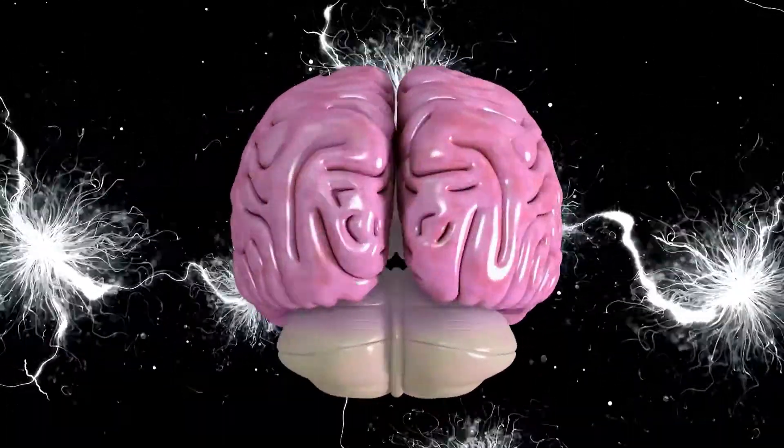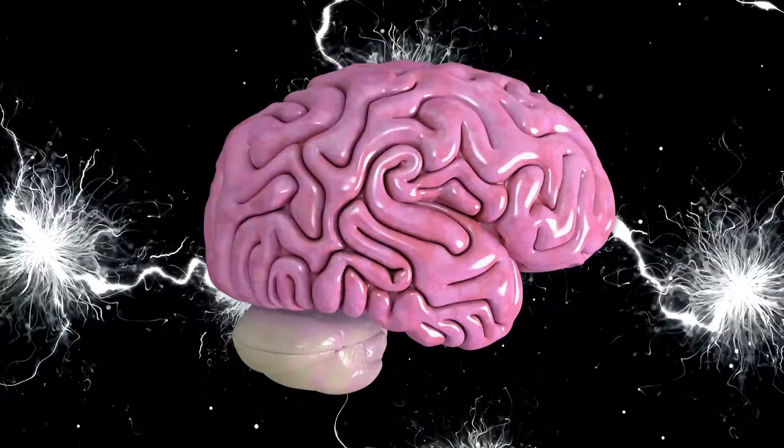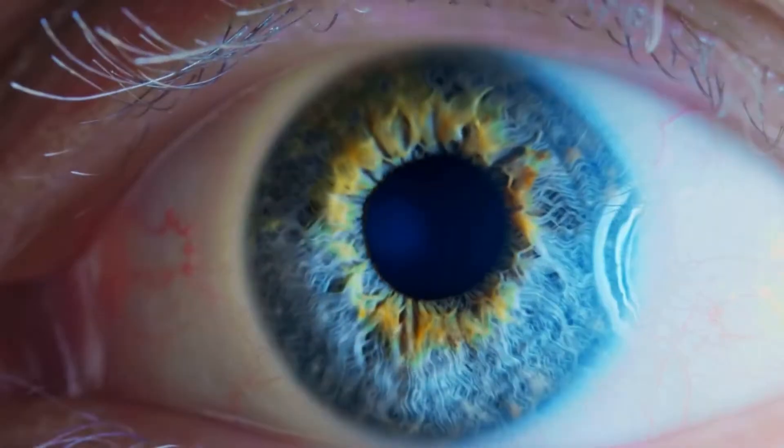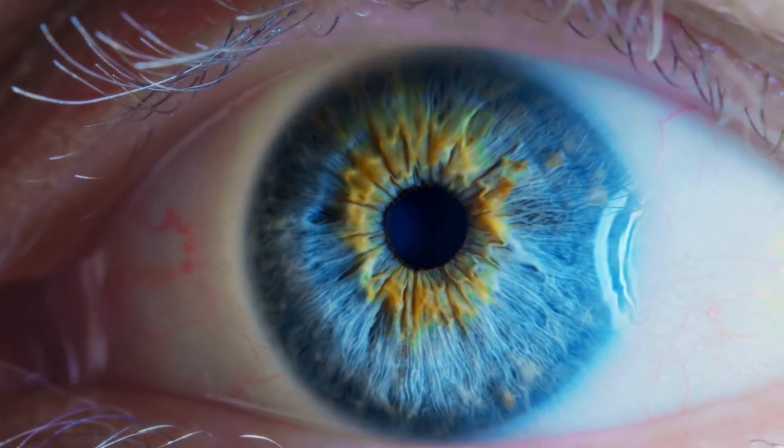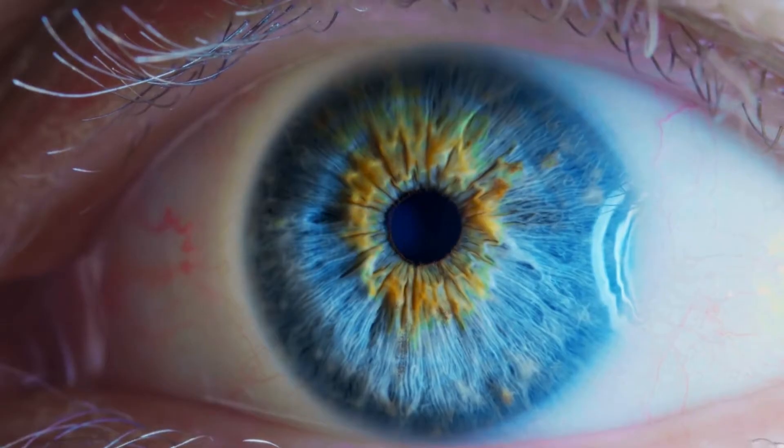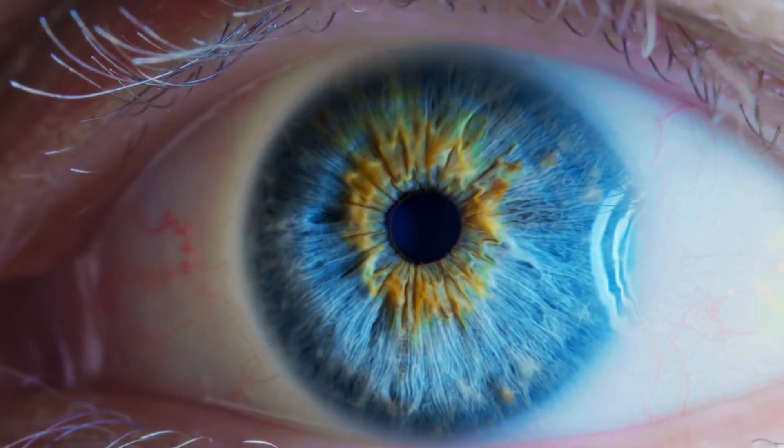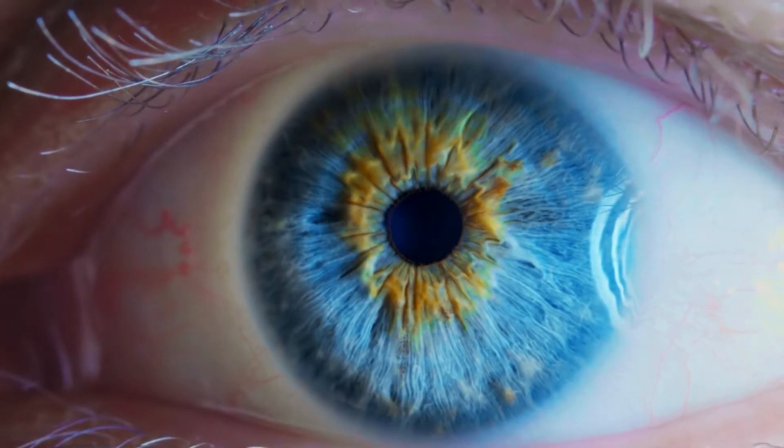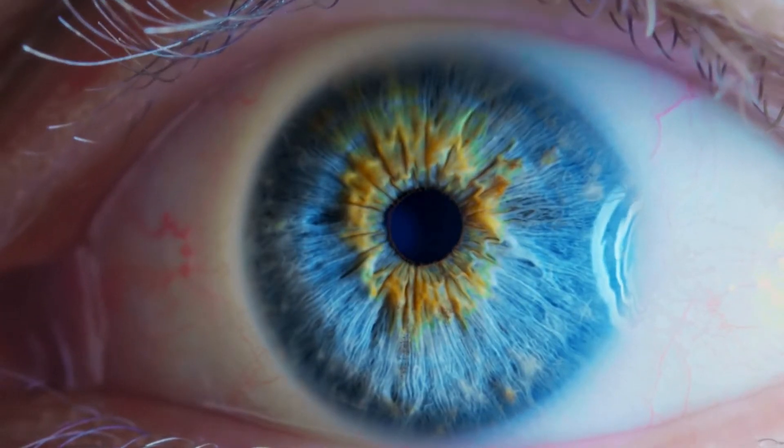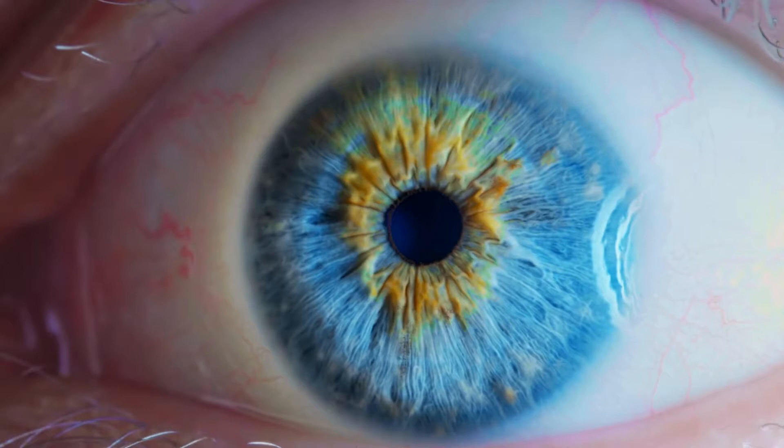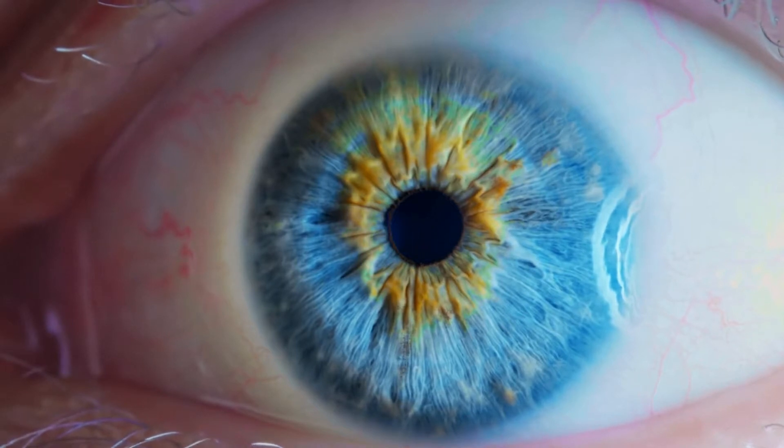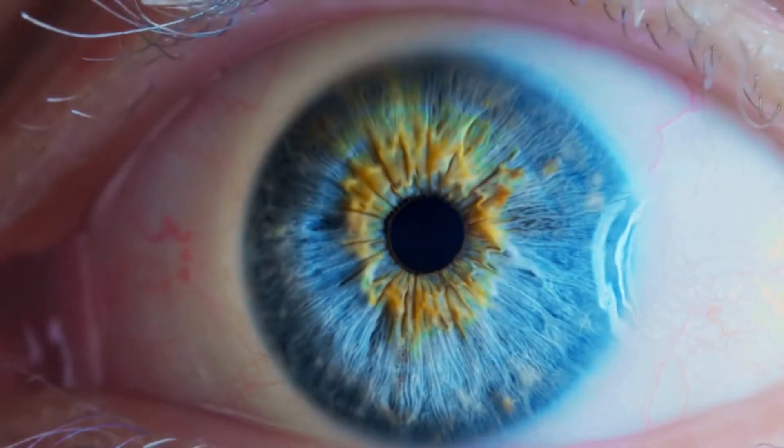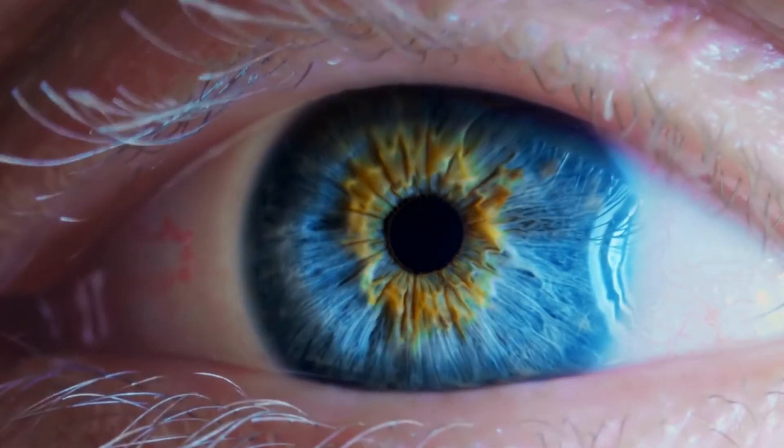All of this happens in a fraction of a second, every single second of our waking lives. Now, proponents of evolution would have you believe that this astoundingly complex system arose through a series of random genetic mutations and natural selection. They claim that over millions of years, simple light-sensitive cells gradually evolved into the sophisticated eyes we have today. But let's think about this logically.